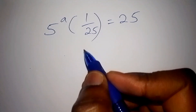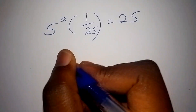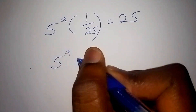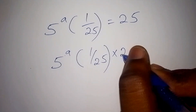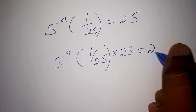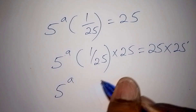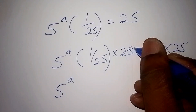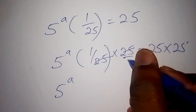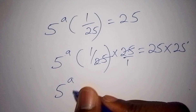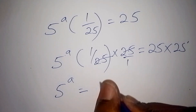To remove this bracket, we shall multiply both sides by 25. So 5 to the power of a, times 1 over 25, multiplied by 25 — and 25 times 25 on the right side. Since 25 over 1 and 1 over 25 cancel each other, we get 5 to the power of a equals 25 times 25, which is 625.